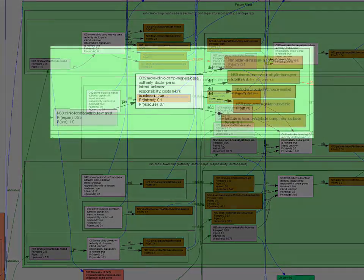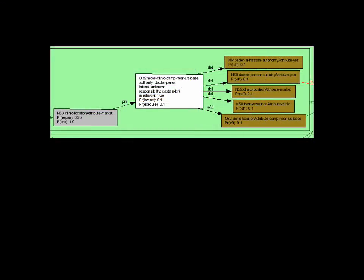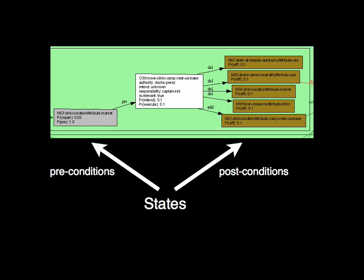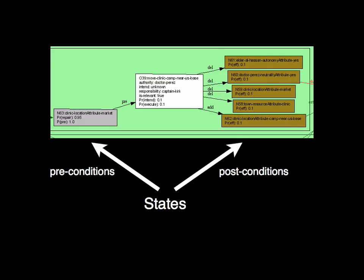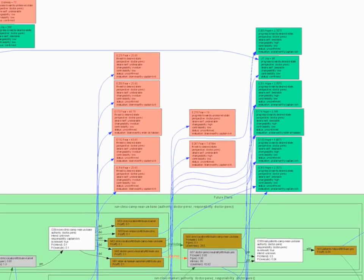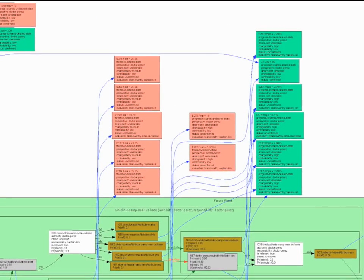To perform the evaluation, the characters each have a task model of actions that may take place and the resulting states. Each character forms appraisals of the state based on their goals. Positive appraisals appear in green, while negative appraisals are in red.